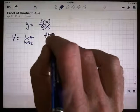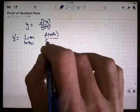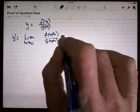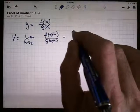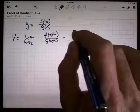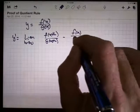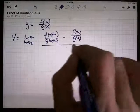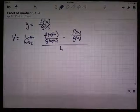so this is f of x plus h divided by g of x plus h, minus just without the x plus h, so f of x divided by g of x, all over h.